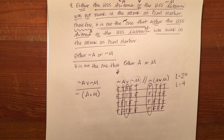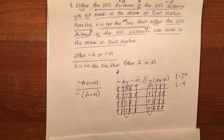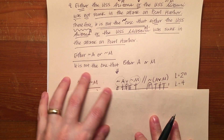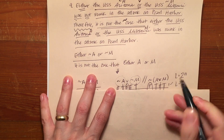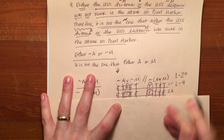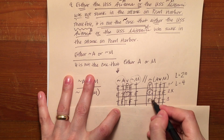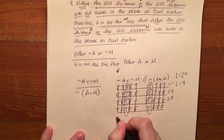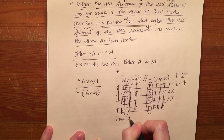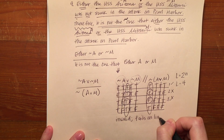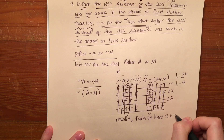I look for lines with a false conclusion — that's lines one, two, and three. On line one, do I have a true premise? No, so that's okay. On lines two and three I have a true premise with a false conclusion. Therefore this is an invalid argument — fails on lines two and three.